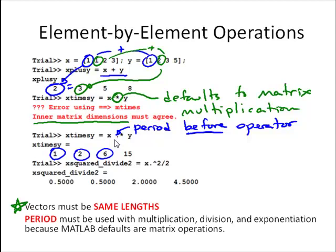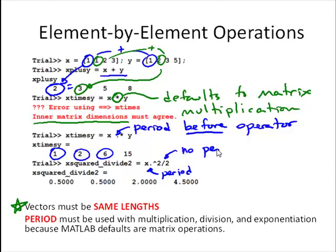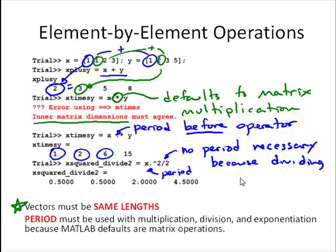We can do the same for division and exponentiation — use that period for element-by-element operations. I didn't use the period for division in this case because we are dividing by a scalar. If we're dividing or multiplying by a scalar, we don't need the period. But it doesn't hurt to put the period there anyway — MATLAB would not give an error and you're just playing it safe. So two keys when doing math with vectors: vectors must be the same length, and we need a period for multiplication, division, and exponentiation right before the operator.